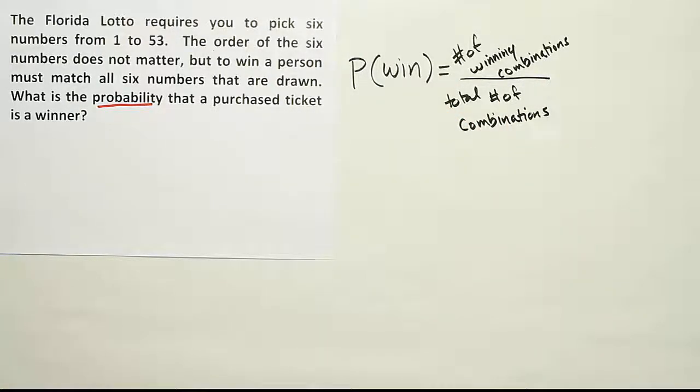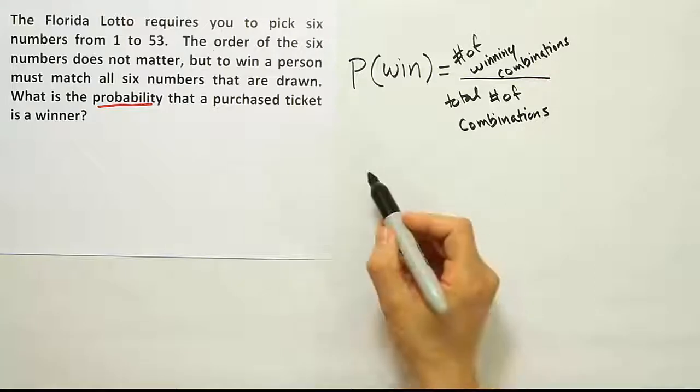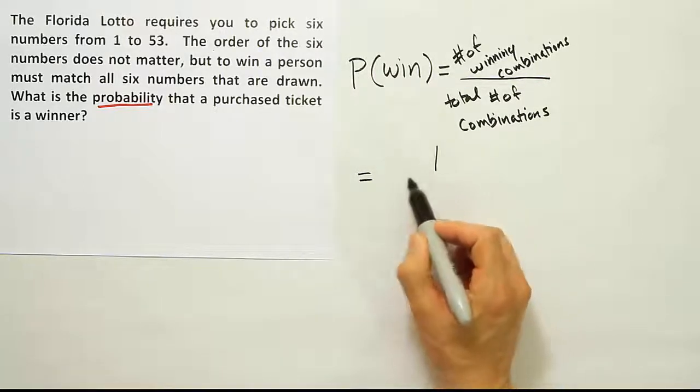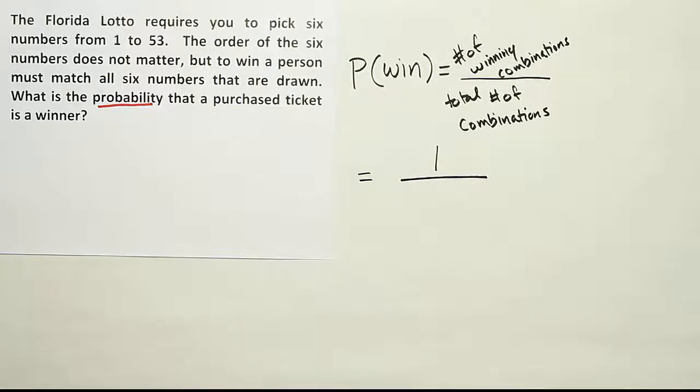So in this case, when I say number of winning combinations, I have to think about it. I bought one ticket. That one ticket has a combination of six numbers on it. Only that combination is a winner. So basically at that point, I have to say to myself, I know the top number easily. The top number has got to be one. So I don't have to worry too much about that. There's only one way I can win. If the six numbers that are drawn from the machine match my six numbers, I win. Only one winning combination possible.